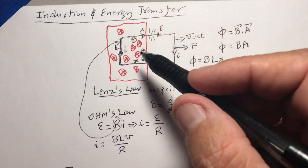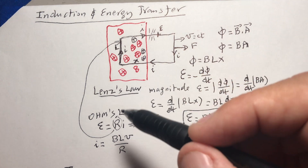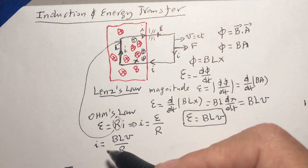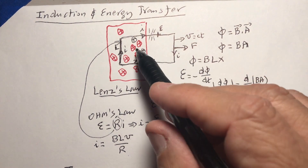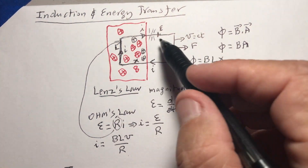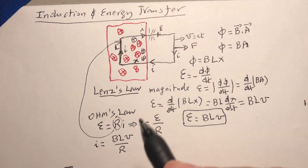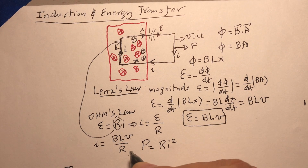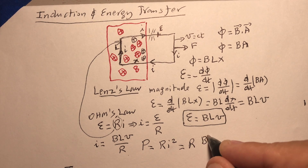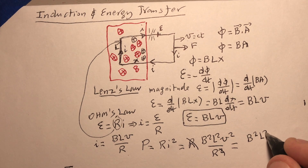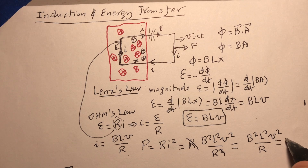Now we find the power. Power equals RI². Substituting I = BLV/R gives P = R·(B²L²V²/R²), and canceling one R gives us the power P = B²L²V²/R. This is the power — the energy per unit time coming from the wire.